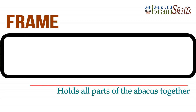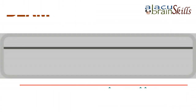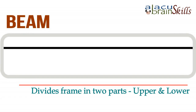Frame: holds all parts of the abacus together. Beam: divides the frame into two parts, upper and lower.